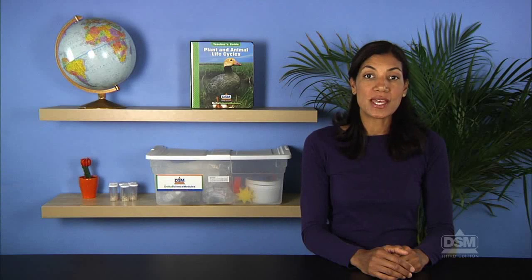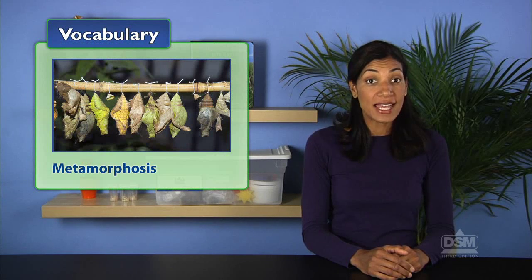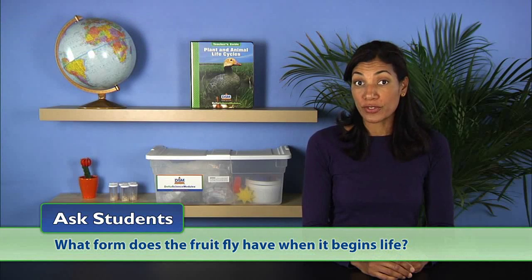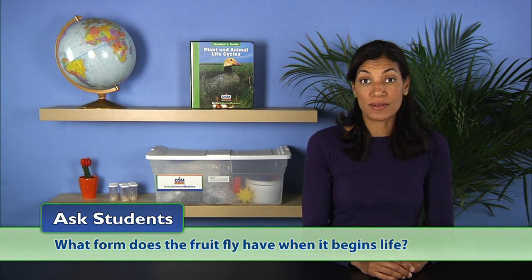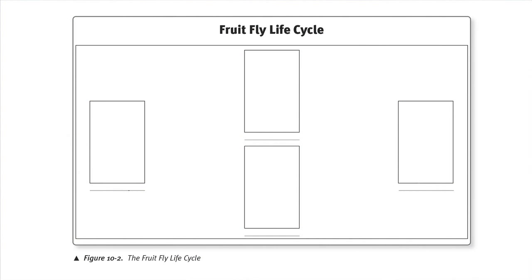Explain to students that metamorphosis is the process of change that fruit flies and other insects go through during their life cycles. Then ask: what form does the fruit fly have when it begins life? Students should respond that it begins as an egg. Direct the students' attention to the fruit fly life cycle chart and on the line below box one on the chart, write the word egg.